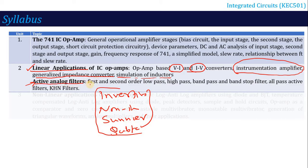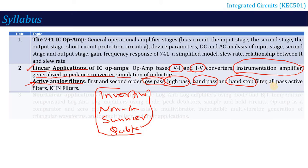The most important topic of this unit is active filters. There are four types of filters in your syllabus: low pass, high pass, band pass, and band stop. For each filter, there are mainly three types of questions: the circuit, the mathematical derivation to calculate output voltage, and the designing/numerical part. Additionally, you will study the all-pass filter and the KHN filter, which can realize all filter types and is also called a universal filter.